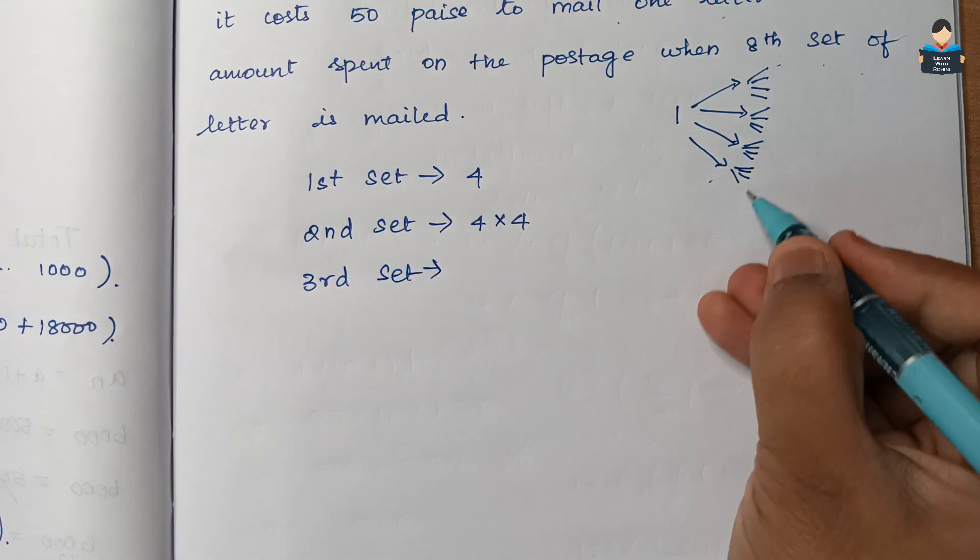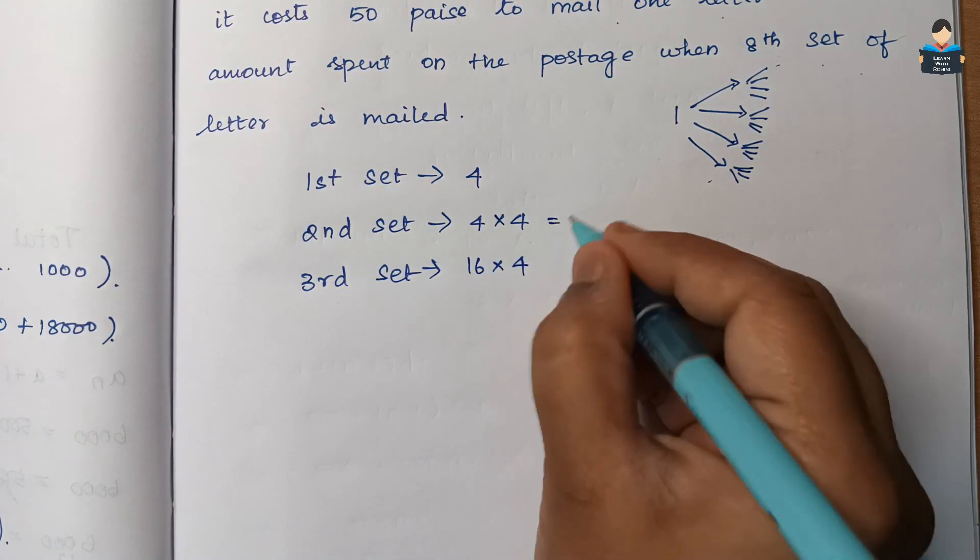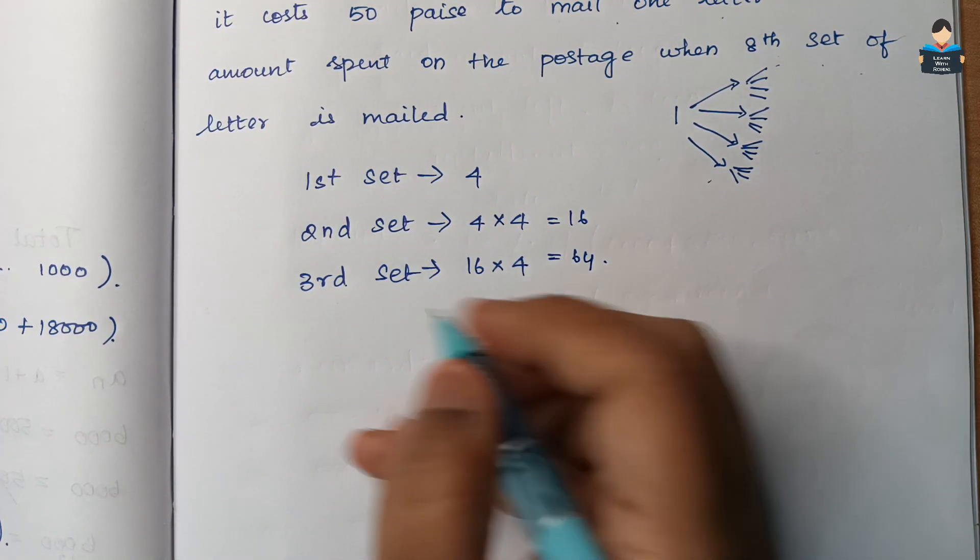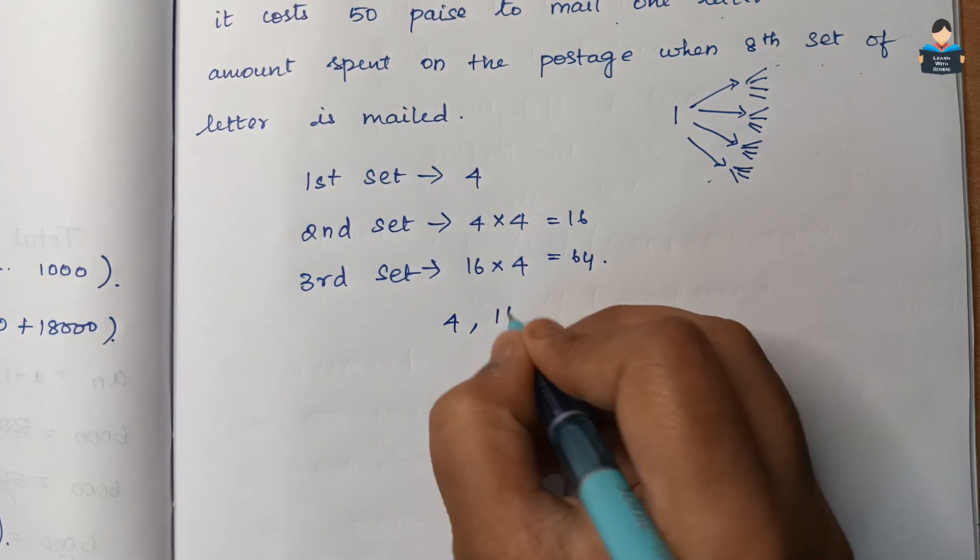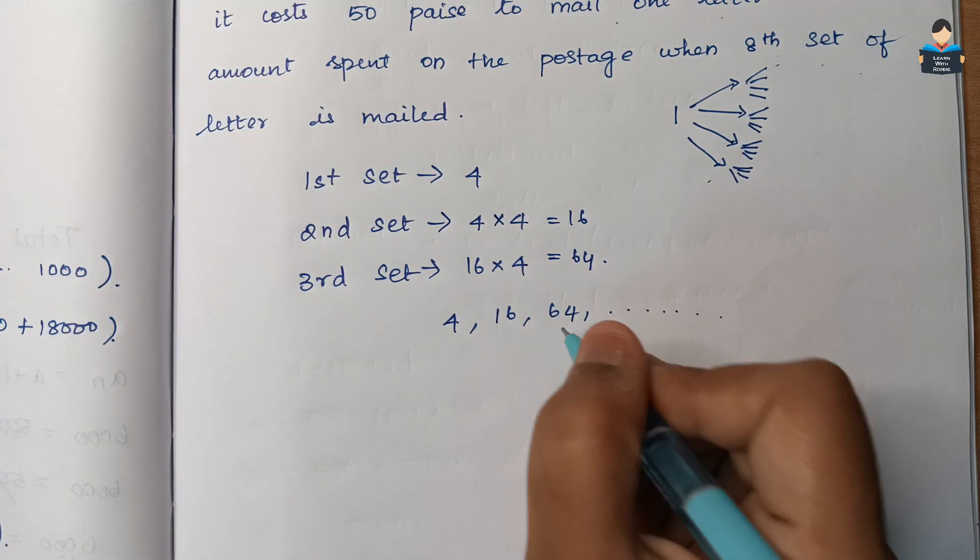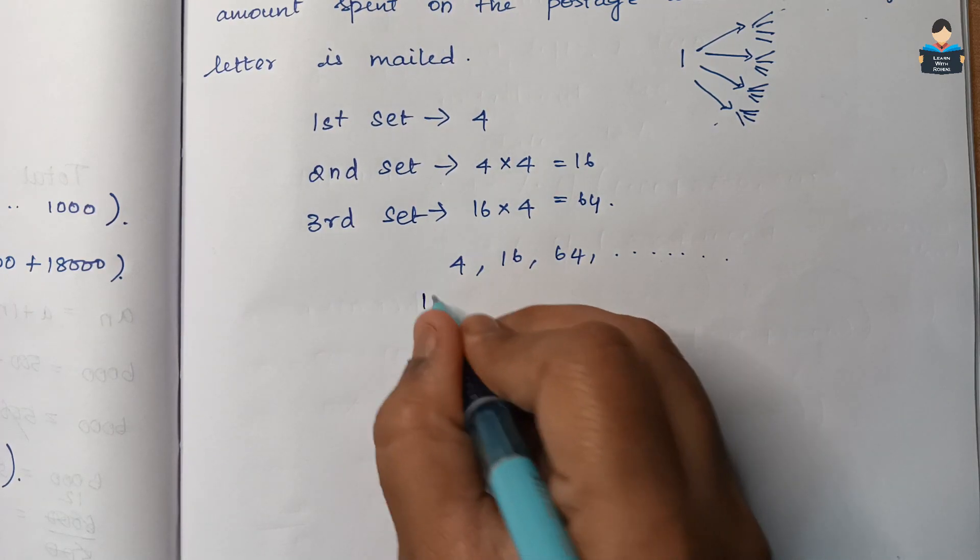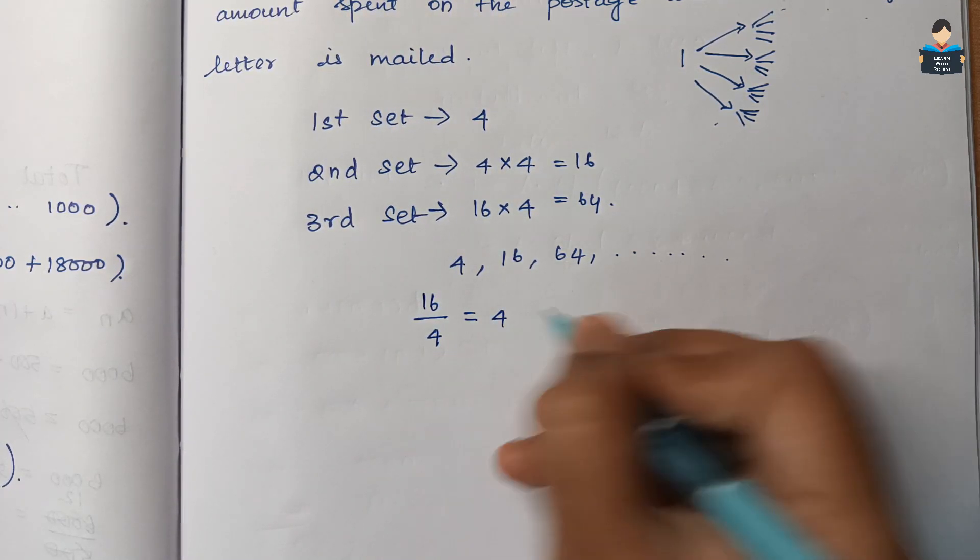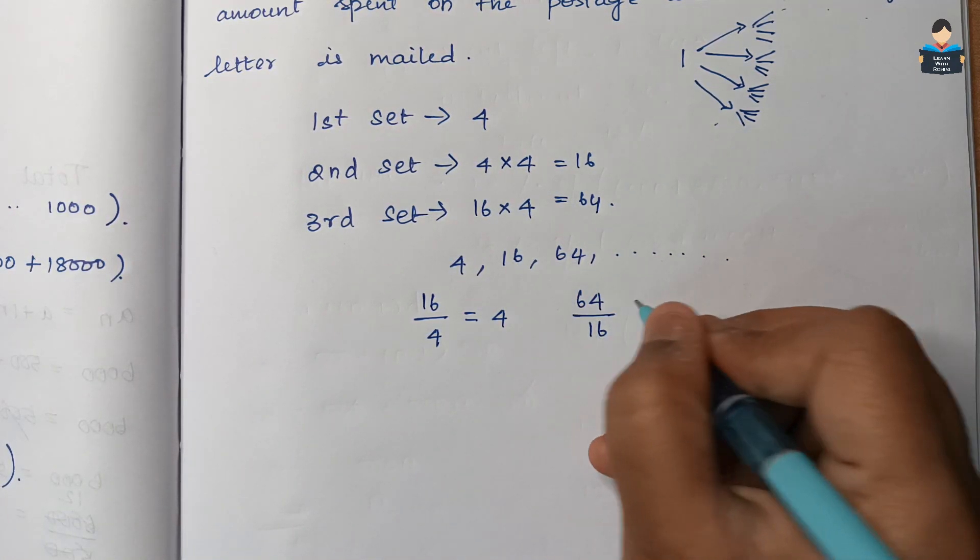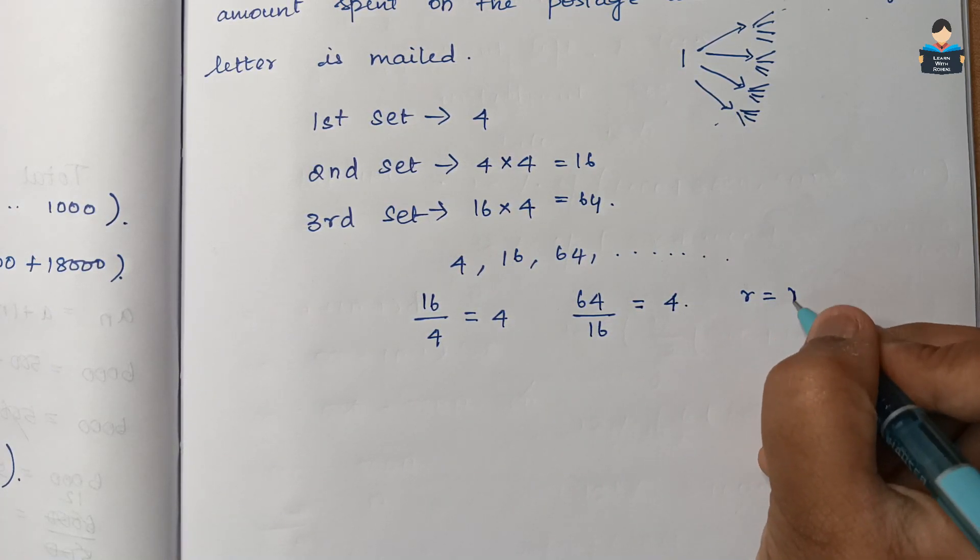So the sequence of number of letters is 4, 16, 64. This is a GP. To find the common ratio, divide second term by first term: 16 by 4 equals 4, 64 by 16 equals 4. So common ratio R is 4.